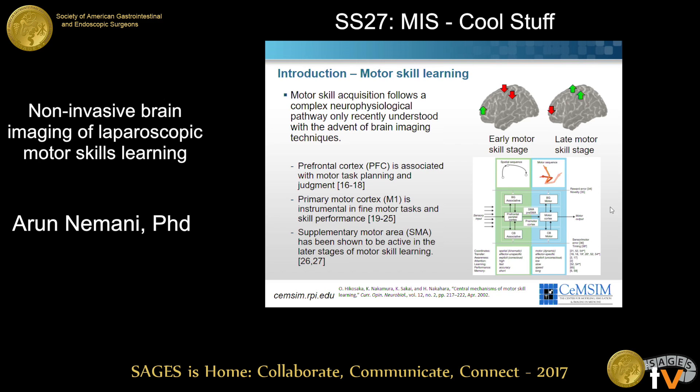Now that we've picked infrared spectroscopy, where do we look? There are three regions we're interested in regarding surgical motor skills specifically. The first is the prefrontal cortex, then the primary motor cortex, and finally the supplementary motor area. All three of these areas have been studied extensively and are highly important when it comes to not only task performance, but also motor skill learning.